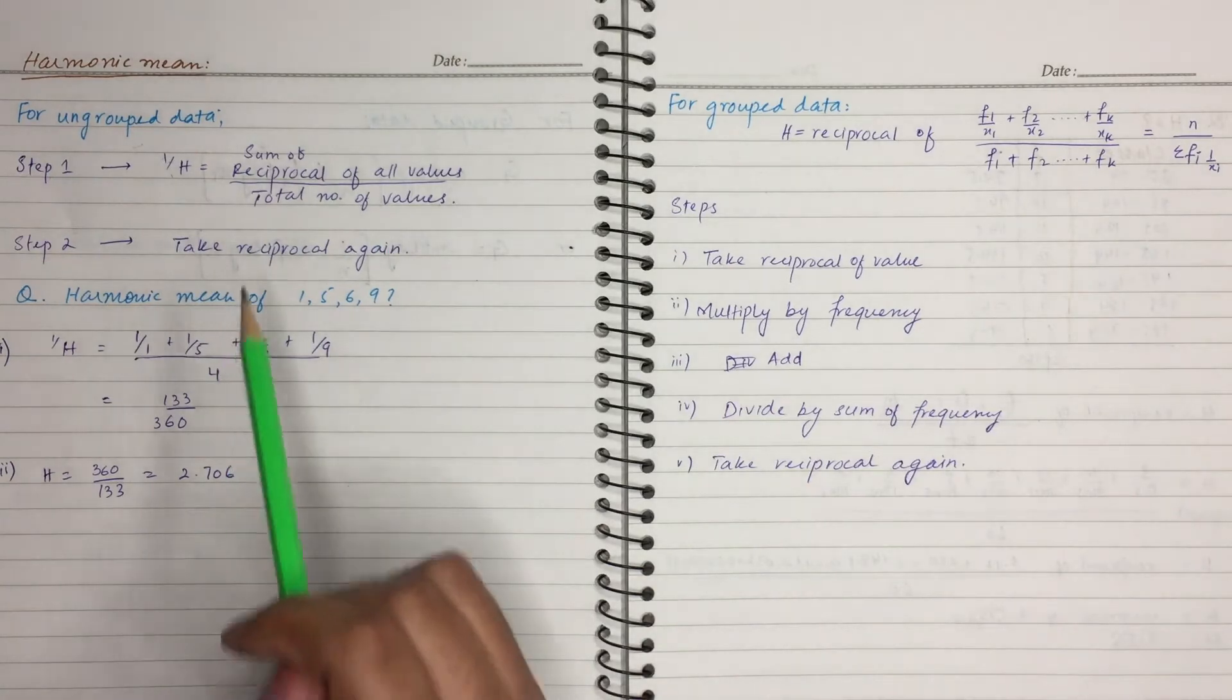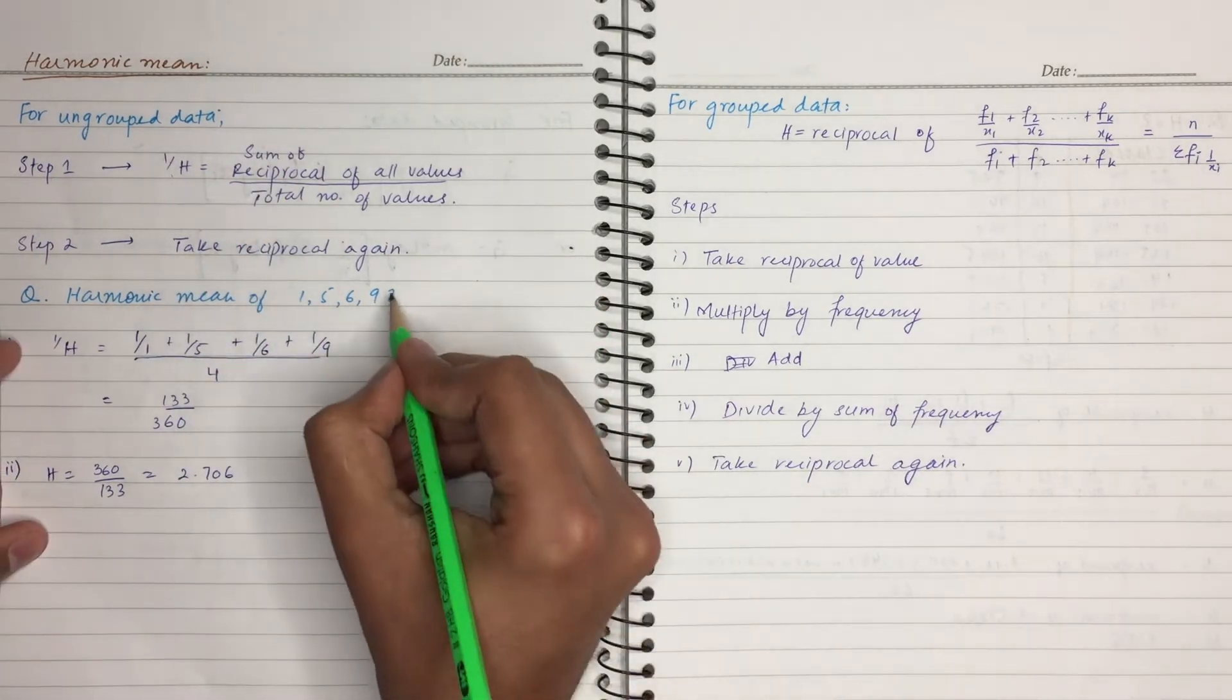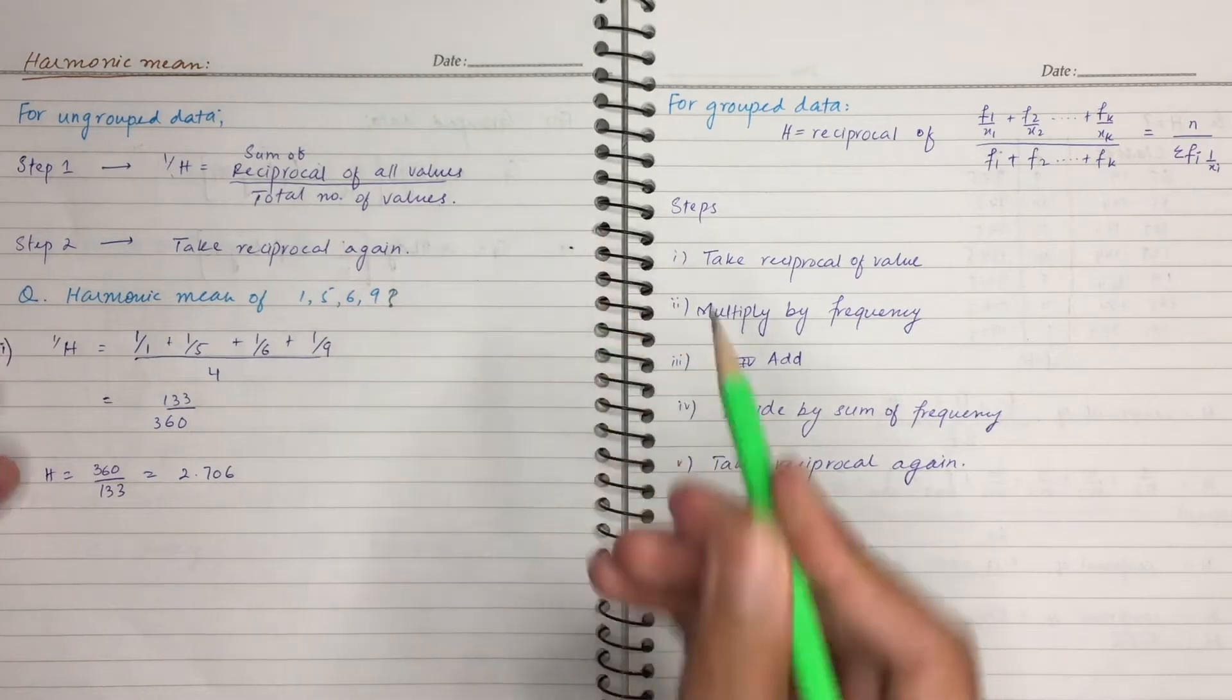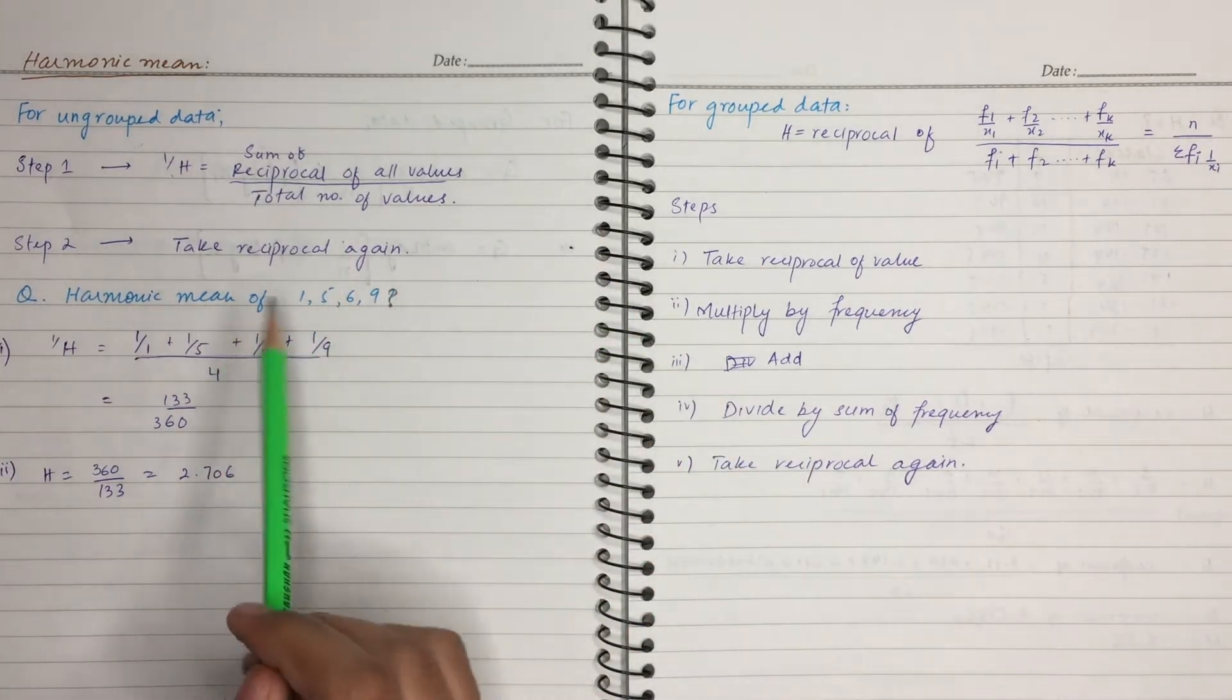If we look at this example, ungrouped data is 1, 5, 6, 9. This is the question. 1, 5, 6 and 9. What is our formula?